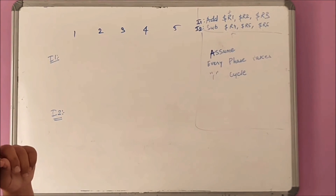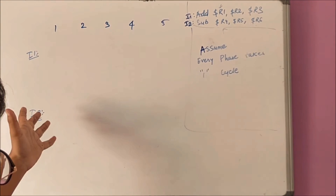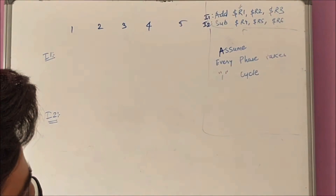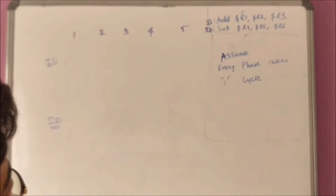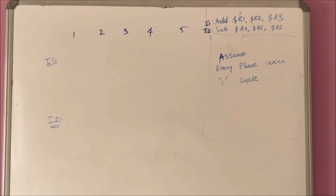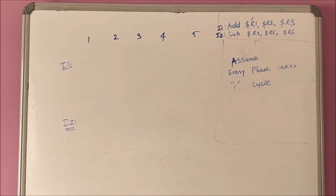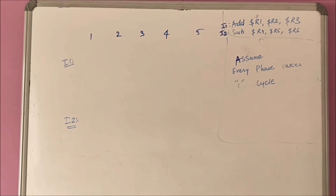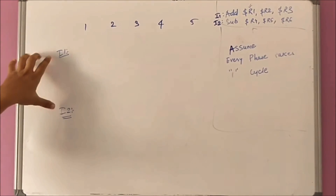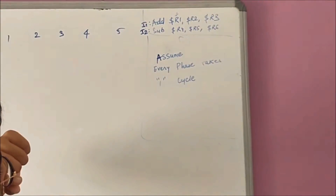Hello guys, welcome to Quick Tricks. In a previous video we saw what are the stages needed for an instruction to get executed. There were five stages: instruction fetch, instruction decode, execute, memory access, and write back. Here we'll be executing two instructions, I1 and I2, which are add and subtract.